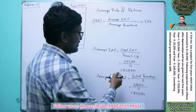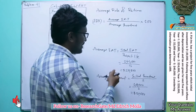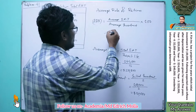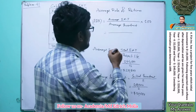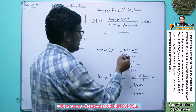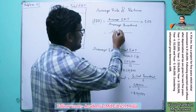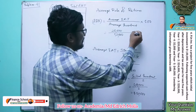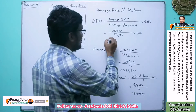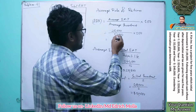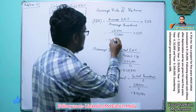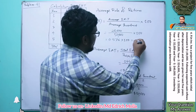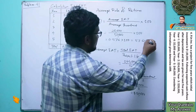We have computed both components: Average EAT of $28,800 and Average Investment of $50,000. Inputting these into the equation: (28,800 ÷ 50,000) × 100 = 0.576 × 100 = 57.6%. Therefore, the Average Rate of Return is 57.6%.